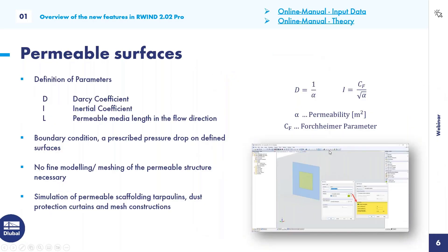On the permeable surfaces slide, I've put clickable links in the top right that guide you to the online manual topics. These newly introduced surfaces are meant to be used for zones as a material. You enter three parameters: the Darcy coefficient, the inertial coefficient, and the permeable media length in the flow direction. The formulas involve permeability in square meters and a Forchheimer parameter. There are preset standard values, but you can calculate and enter your own.